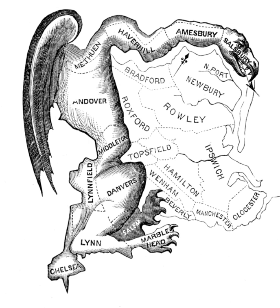Prison-based gerrymandering occurs when prisoners are counted as residents of a particular district, increasing the district's population with non-voters when assigning political apportionment. This phenomenon violates the principle of one person, one vote because, although many prisoners come from and return to urban communities, they are counted as 'residents' of the rural districts that contain large prisons, thereby artificially inflating the political representation in districts with prisons at the expense of voters in all other districts.